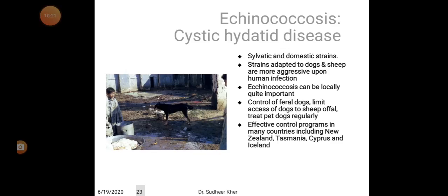Silvatic and domestic strains adapted to dogs and sheep are more aggressive upon human infection. Echinococcus can be locally quite important. Control measures include control of feral dogs, limiting access of dogs to sheep, and treating pets and dogs regularly. Effective control programs exist in many countries including New Zealand, Tasmania, Cyprus, and Iceland.